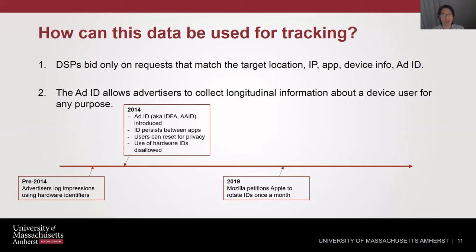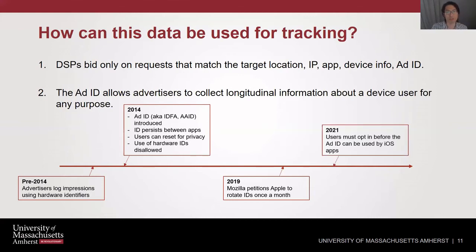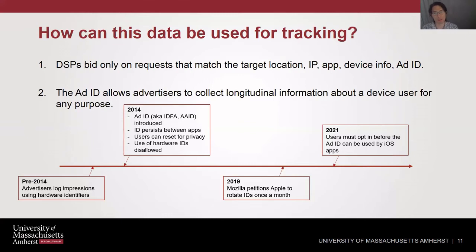In 2019, because this was still somewhat of a privacy concern, Mozilla petitioned Apple to start rotating IDs once a month. And actually very recently, earlier this month, it was announced that ad IDs will be required to be an opt-in permission on iOS apps early next year.